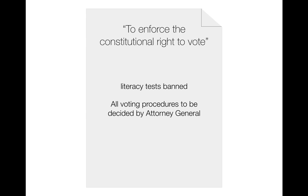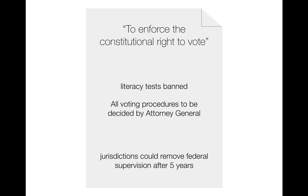The federal government was given more power because the southern states were doing everything they could to block Black Americans from registering. The agreement was that federal jurisdiction over a southern state that had been blocking Black voters could be removed if there were no issues after five years. So if a state complied with the law and didn't try to stop any African Americans from voting, after five years the federal government would no longer be monitoring that area.